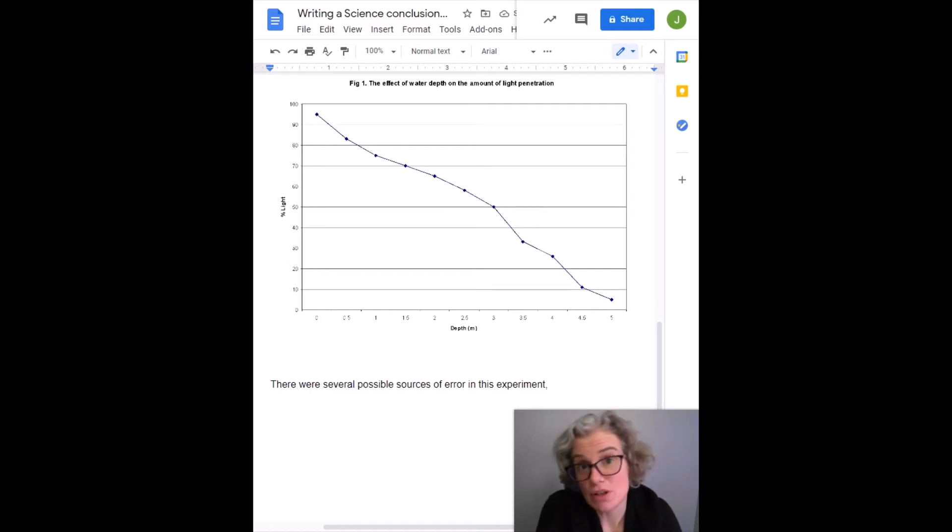Now, as we start to brainstorm errors, some pet peeves of mine: I hate when kids say human error, or they say I measured wrong. To me, these are middle school type answers. Shame on you if you measured wrong - I taught you how to measure, you should measure correctly. So it needs to be something deeper than that. If you absolutely can't think of anything else, then go ahead and put that, but I think you can do better.